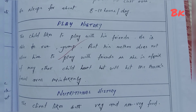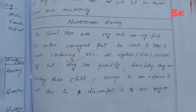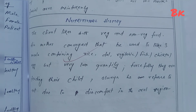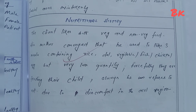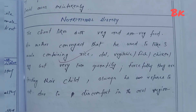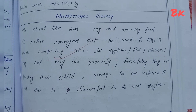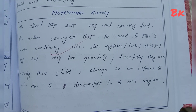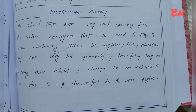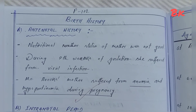Nutritional history: the client likes both vegetarian and non-vegetarian food. His mother conveyed that he used to take three meals containing rice, dal, vegetables, chicken, and egg, but in very less quantity. They are forcefully feeding their child always, as he refuses to eat due to discomfort in the oral region.